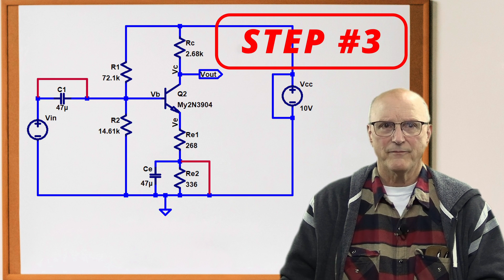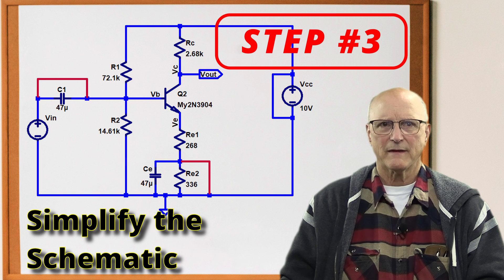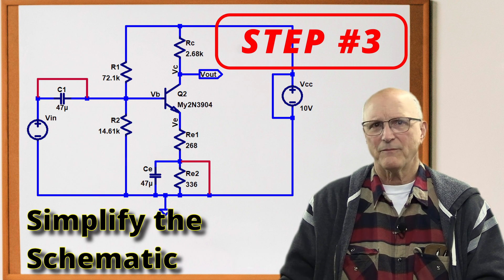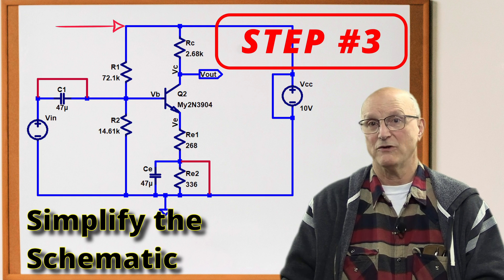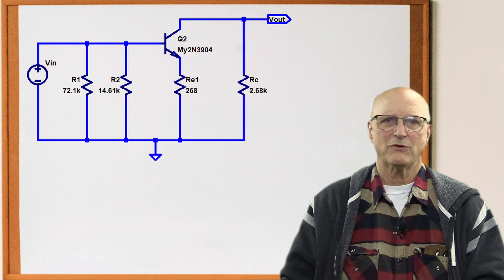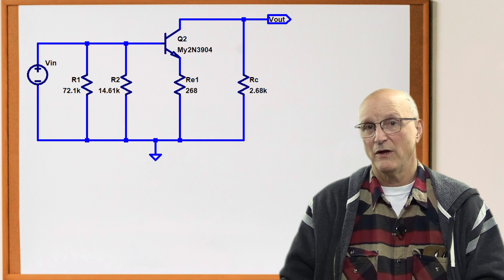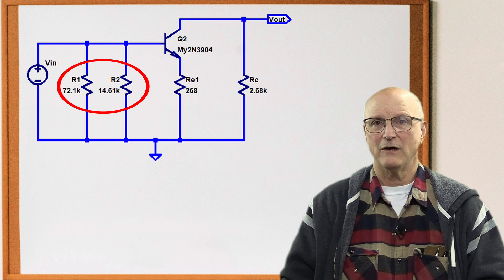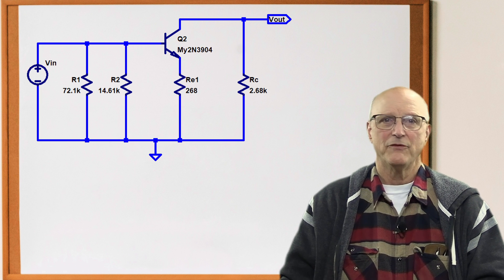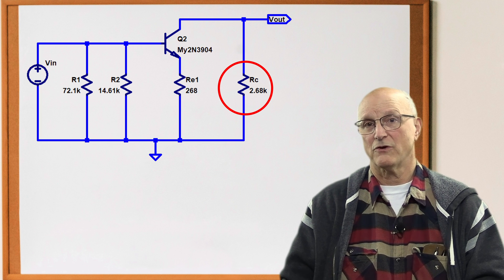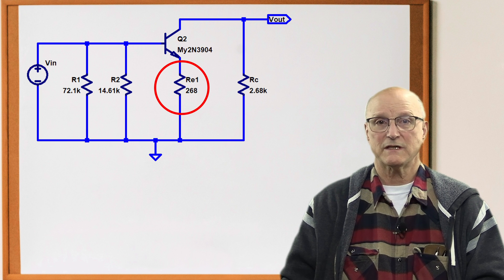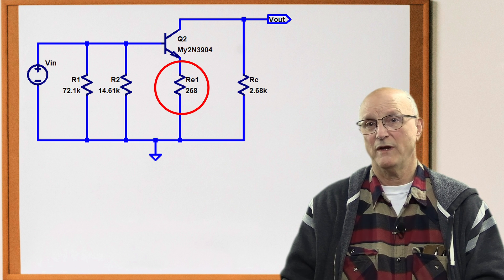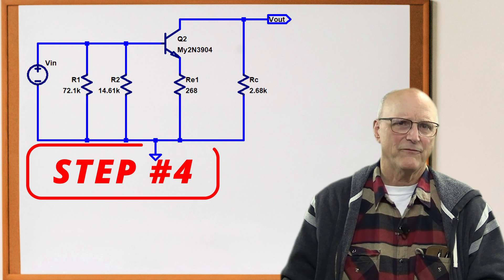Step three: simplify the schematic. In the base circuit, the end of R1 that used to be connected to VCC is now at ground, so that end swings around next to R2 — we now have R1 in parallel with R2. In a similar manner, the collector resistor goes from the collector to ground. The emitter circuit now has a single 268 ohm resistor between emitter and ground.